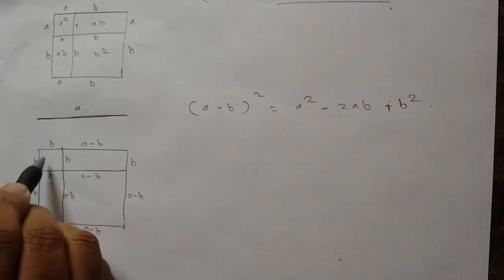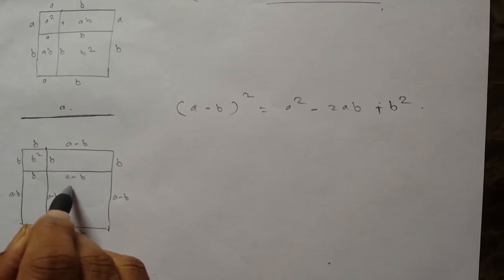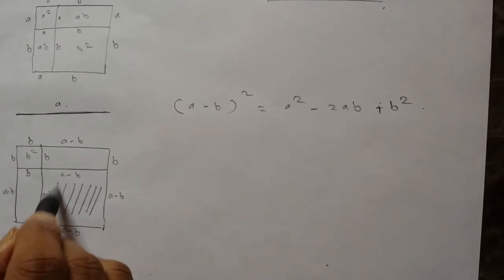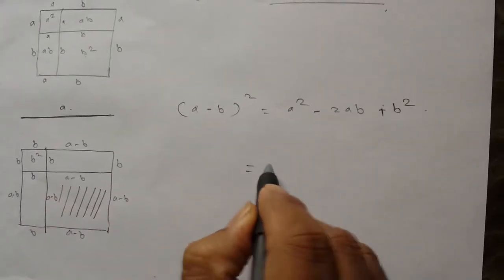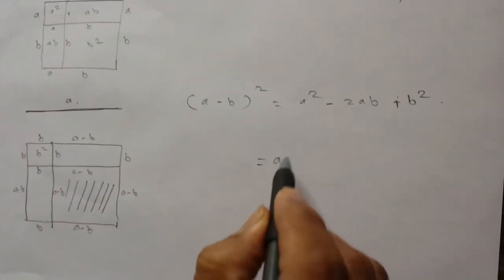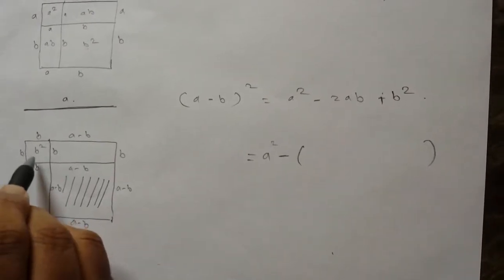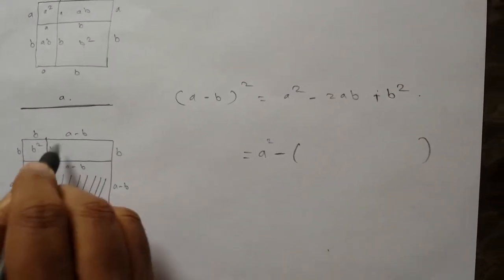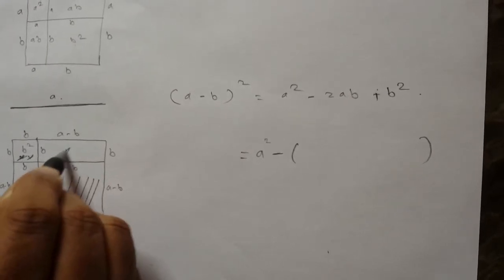So you have b squared. Your area of interest is this (a minus b) squared — this is the area. What we are going to do is, since this is the square of a, we are going to find a squared and subtract this portion. Let's mark this as a star — we will subtract this star portion from a squared.